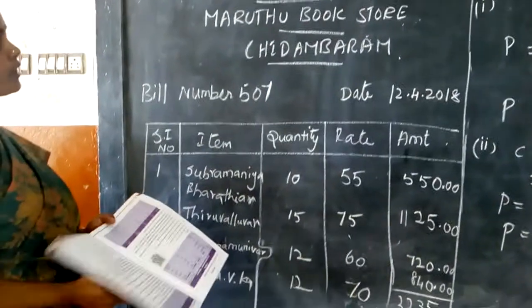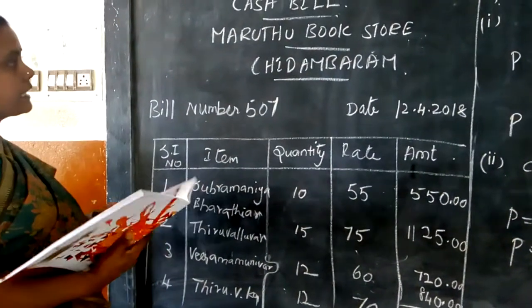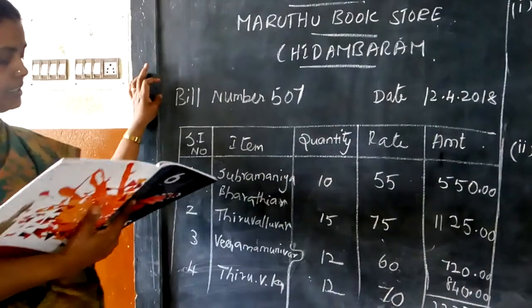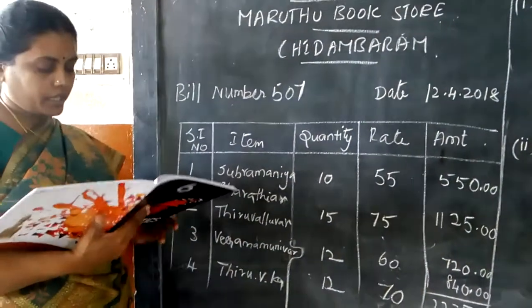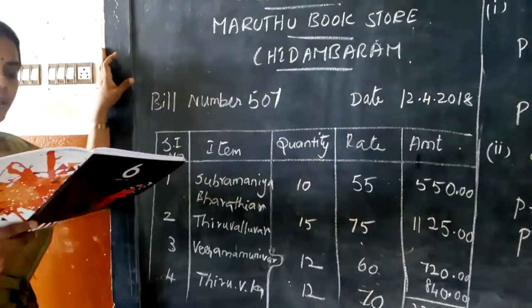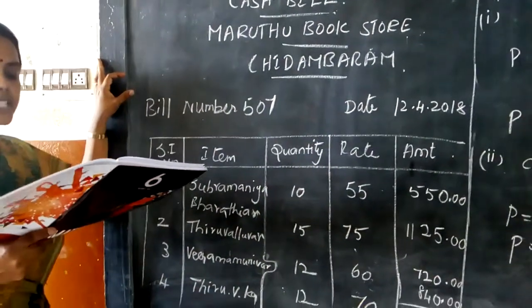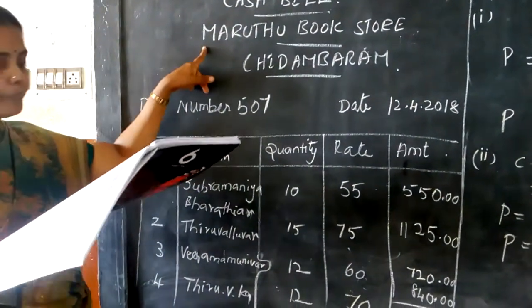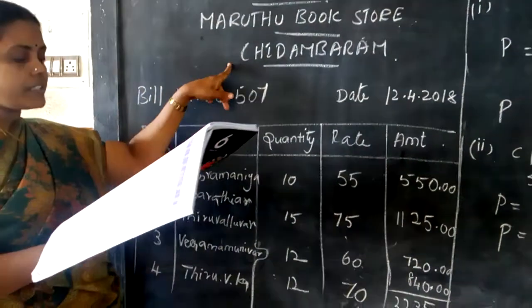Good morning students. Today we are going to take this 3.1, the second question. In this you are going to prepare a bill. The question is, prepare a bill for the following books of biographies purchased from Mahudu Bookstore, Chidambaram.